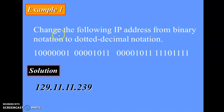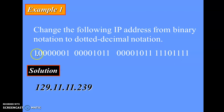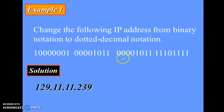Here we will take one example. Change the following IP Address from binary notation to dotted decimal notation. There is provided a 32-bit long IP Address with 4 different groups. Each group which is of 8 bits will represent one decimal value. So the first byte is 129, the second byte is 11, the third byte is 11, and the last byte is 239.